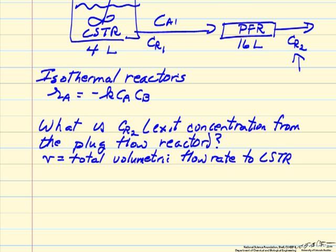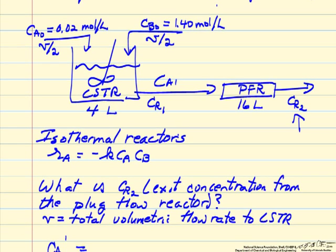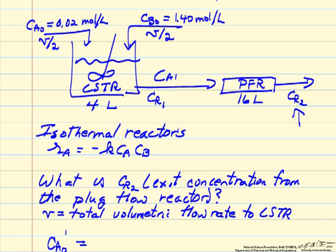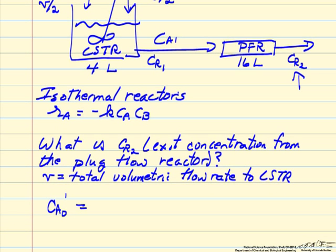So first let's look at what are the concentrations coming into the system. If we pretend to mix the two streams together, it just makes the calculations easier. Total volumetric flow rate of V, so then the concentrations of A and B are diluted to half of the values in their individual streams. And I'll use a prime to indicate those concentrations.